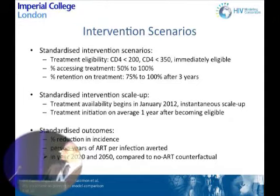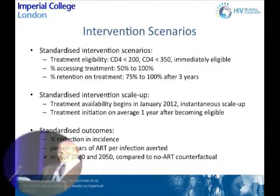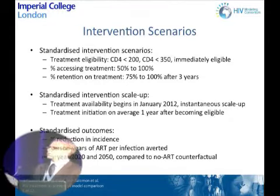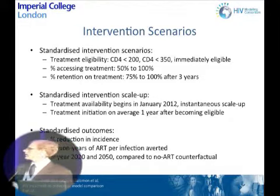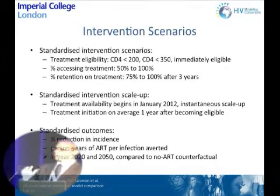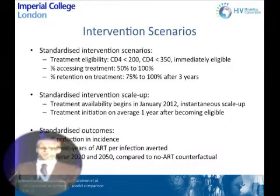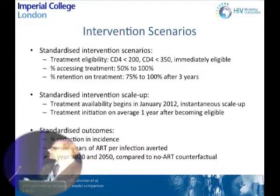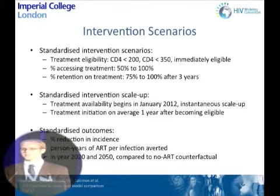The outcomes we looked at were the percentage reduction in HIV incidence and the number of person-years of ART provided per infection averted. We looked at these outcomes in 2020 and 2050 — eight years and 38 years after the beginning of the ART program — calculated compared to a counterfactual with no ART provided. So the results compare a stylized intervention program to what would have occurred with no treatment; the purpose is to understand the differences between models rather than evaluate any specific program in South Africa.